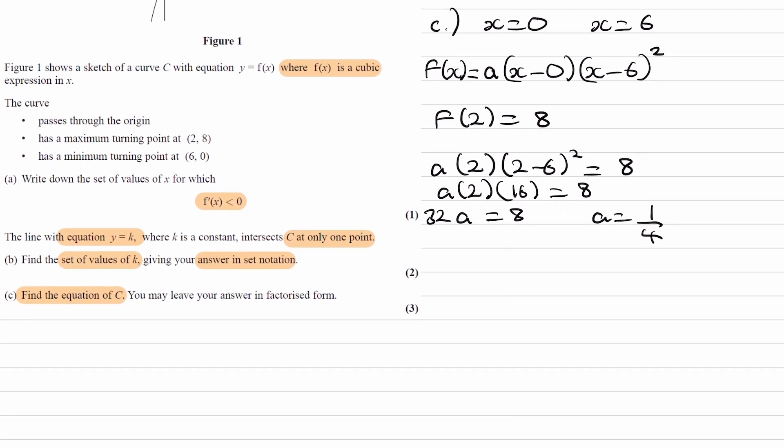And then we may put this into our cubic. We get a quarter x, x minus 6 squared. And that will be our final answer.